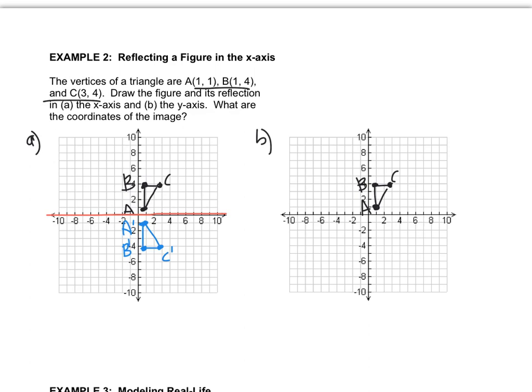We have to write the coordinates, so A' is at (1, -1), B' is at (1, -4), and C' is at (3, -4). And you can see what happened was the y value changed.